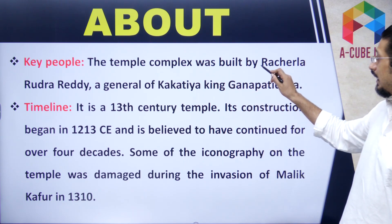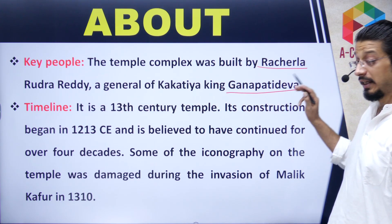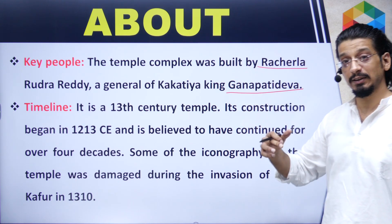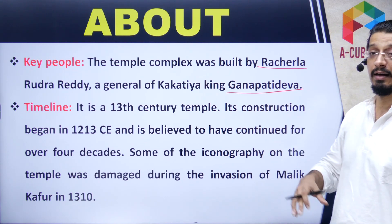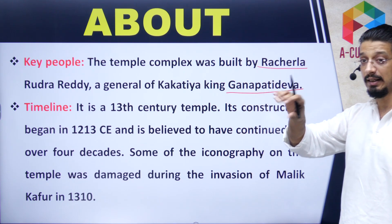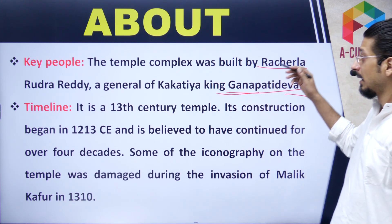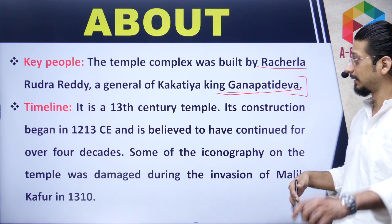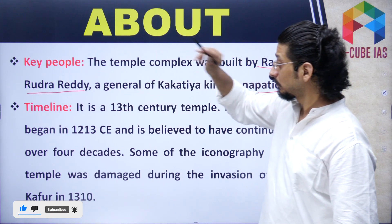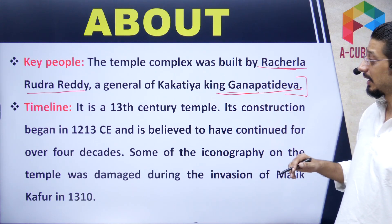The temple complex was built by Recharla Rudra Reddi, a general of Kakatiya King Ganpati Deva. There are three important people involved: the king is Ganpati Deva, and in the Kakatiya sequence — Rudra Pratap, Ganpati Deva, Rudrama Devi — this temple was built during Ganpati Deva's reign. His general Recharla Rudra Reddi commissioned the construction, and the sculptor who built it was Ramappa, after whom it is named.